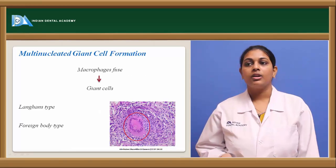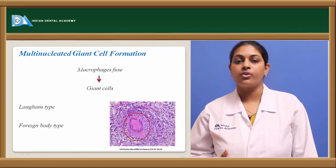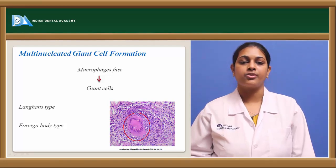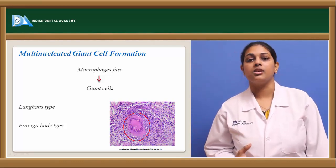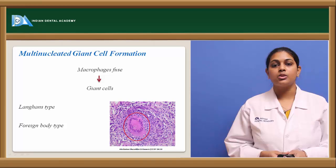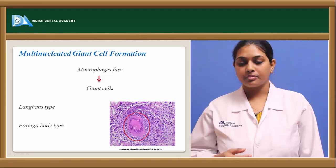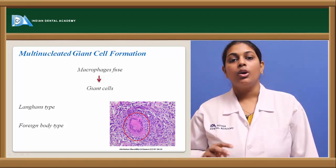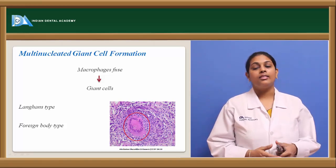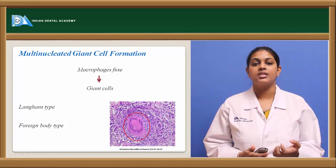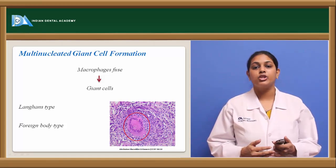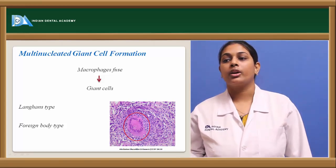The granuloma is microscopically seen as a structureless tissue with granulation tissue formation and presence of giant cells and macrophages. Coming to multinucleate giant cell formation: macrophages which failed to show phagocytosis further fuse to form giant cells. In tuberculosis, there are two types: Langhans type and foreign body type. Langhans giant cells show a large cell with nuclei arranged in a horseshoe pattern or with nuclei divided to opposite poles forming a semicircle. Foreign body giant cells are larger with centrally arranged nuclei.